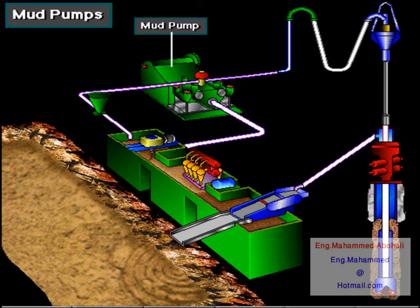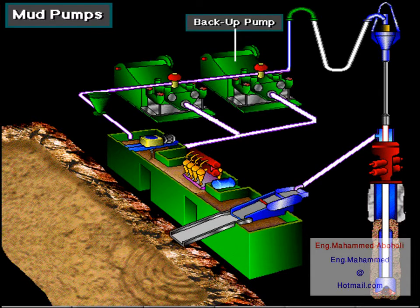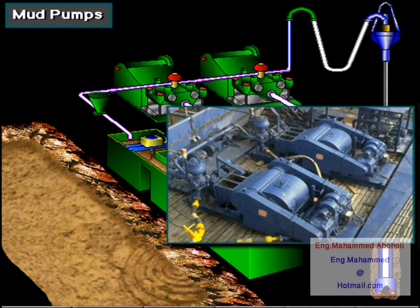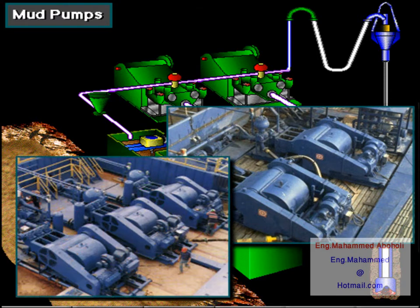The heart of the circulating system is the mud pump. Often, rigs have two pumps — one primary pump and one for backup. Or, if hole conditions require it, the driller can compound or combine the two pumps to circulate large volumes of mud. In fact, on deep wells, the rig may have three or four compound pumps.